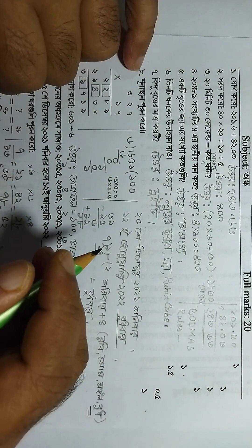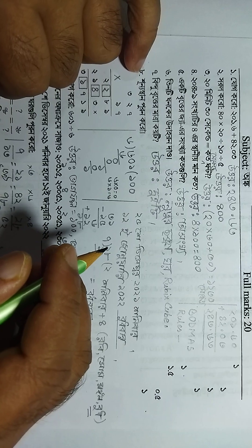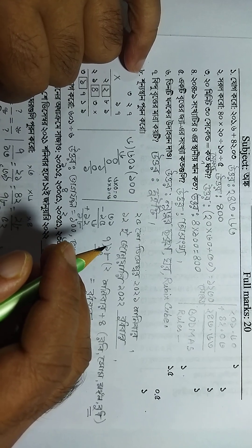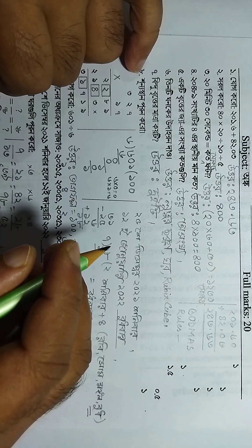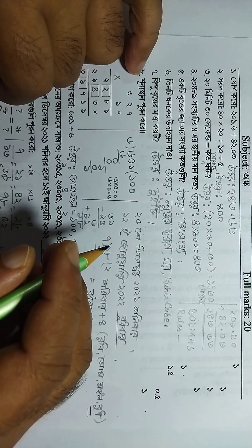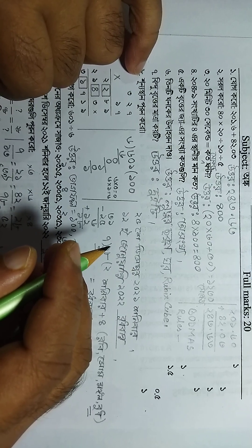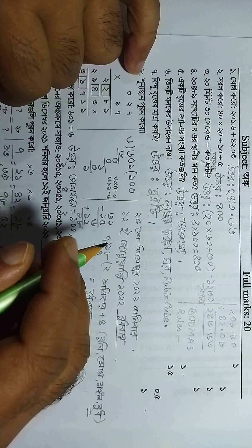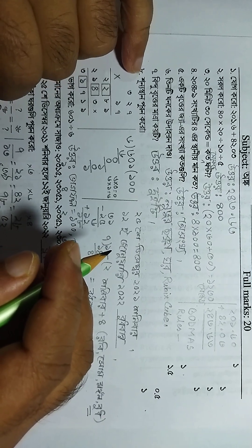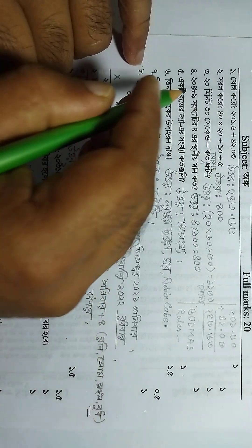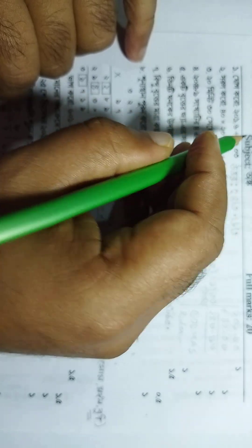Hi students, welcome to my channel BS Tutorial. This video is very important for those students who will take admission in Shagarthigi Thermal Power School this year. So watch the video completely and if you like it please subscribe to my channel for the next video. So I am ready — last year question math. That's problem: 2, 1, 2, 6, 6, 6, 8, 20.